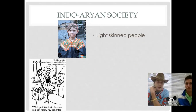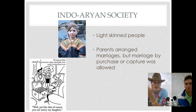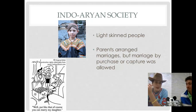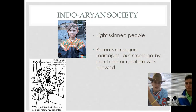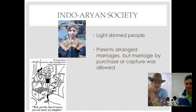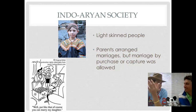Looking at society, for the most part Indo-Aryans had lighter skin. As far as marriages go, unlike what we talked about with Egypt and Mesopotamia, in ancient India parents actually arranged marriages. You might not even know who your bride or husband was going to be — sometimes marriages were made for financial reasons more than for love. Besides arranged marriages, you could also buy your wife through marriage by purchase. Later in ancient Indian society, they allowed marriage by capture, which meant that if you captured a woman from another area, you could bring her back and marry her.